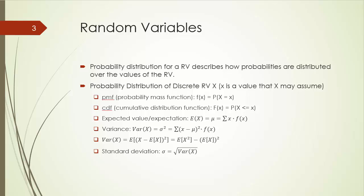Now let's discuss probability distribution. Simply put, probability distribution of a random variable describes how probabilities are distributed over the values of the random variable. Two functions commonly used to describe a discrete probability distribution are probability mass function, PMF for short, and cumulative distribution function, or CDF. Some people call the latter cumulative density function. Either way, the abbreviation is the same: CDF.